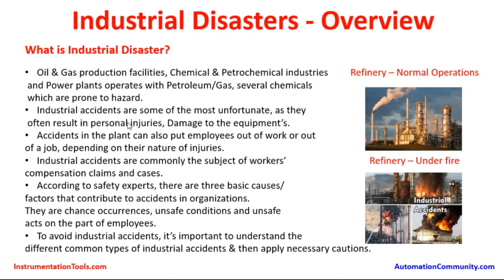Industrial accidents are some of the most unfortunate events, as they often result in personal injuries and damage to equipment. Accidents in the plant can also put employees out of work or out of a job depending on the nature of their injuries. Here we are seeing two photographs: one is a refinery under normal operation with steady-state production, and the second is an industrial accident wherein there was a fire at the refinery.